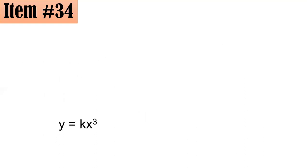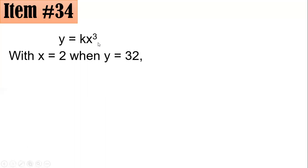Since y varies directly as the cube of x, the equation is y equals kx cubed. Substituting x equals 2 and y equals 32: 32 equals k times 2 cubed. Since 2 cubed is 8, we get 32 equals 8k, so k equals 4.